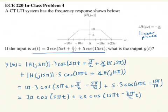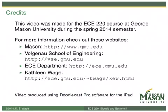All we used here was basically the eigenfunction property, but we took advantage of the fact that the system has a conjugate symmetric frequency response, so we didn't actually have to write out the separate eigenfunctions — we could just use the cosine form directly. So now you've seen three more examples of filtering sinusoids, and I hope that gives you a better understanding of what's going on. If you want more information on the class at Mason or the ECE programs in general, you can check out these websites. Thanks for watching.